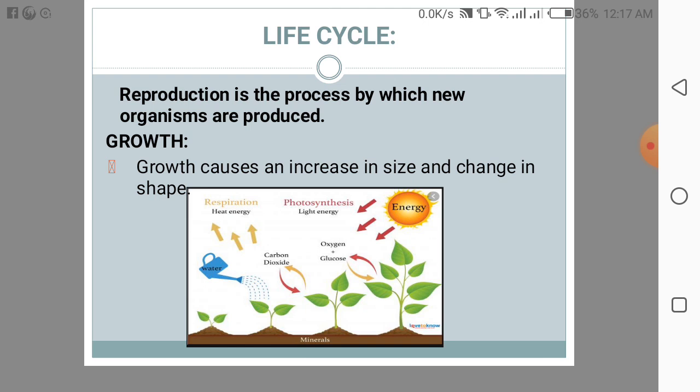The new individual has both characteristics of the parents. Now, asexual reproduction does not involve gametes. Some organisms have the capability to reproduce by growing new parts which can live as separate individuals, and it only has one parent.